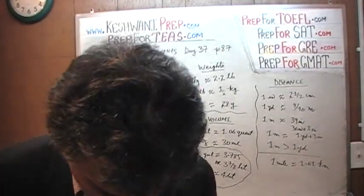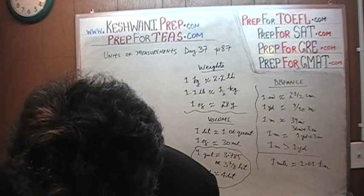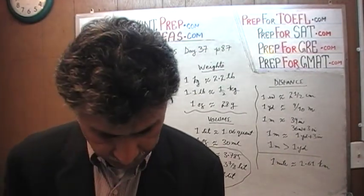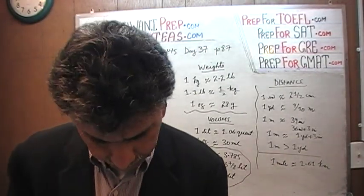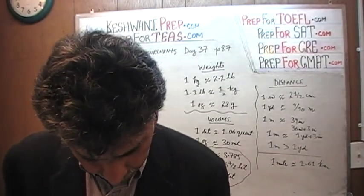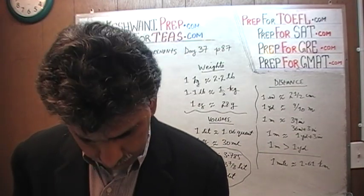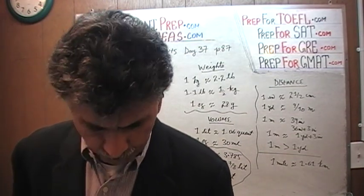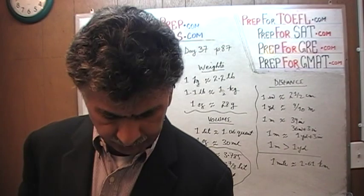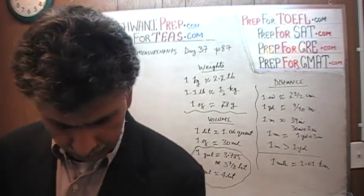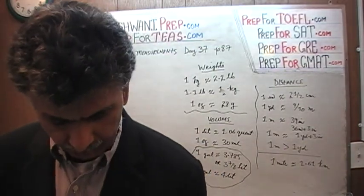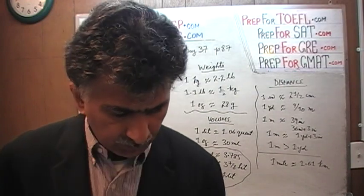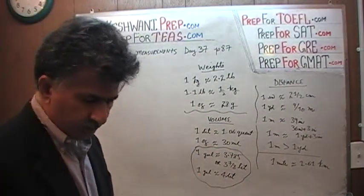So that was it. Let's do some problems. The first problem, 2.42 — we're not going to do it; it's too silly. It says which one is larger, a kilometer or a meter. Obviously, a kilometer is larger because it's a thousand times the meter. Let's look at 2.43 on the next page, page number 88.